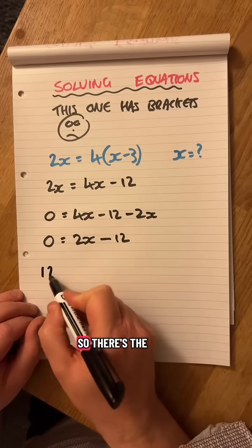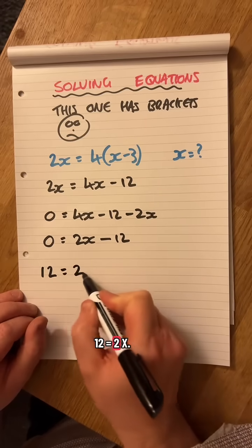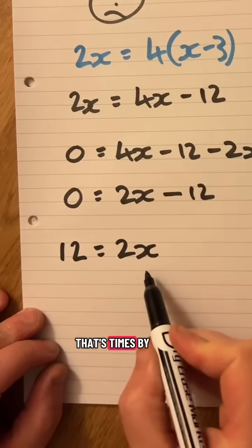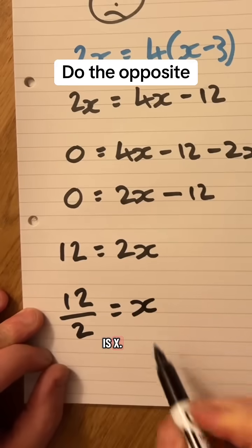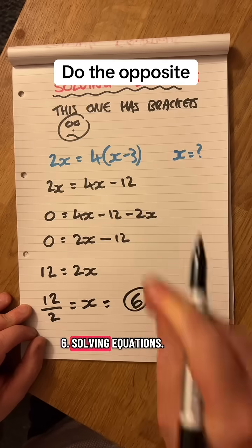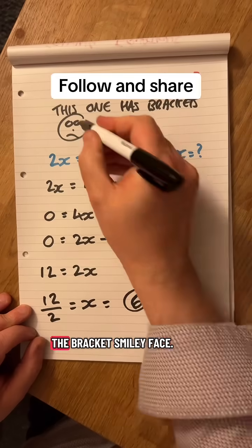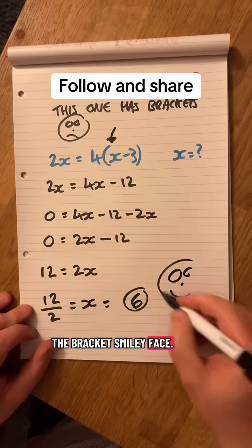So there's the 12 equals 2x. That's times by, look, so the opposite of times is divide. So 12 divided by 2 is x, that gives me 6. Solving equations, don't be scared of brackets. Smiley face, over and out.